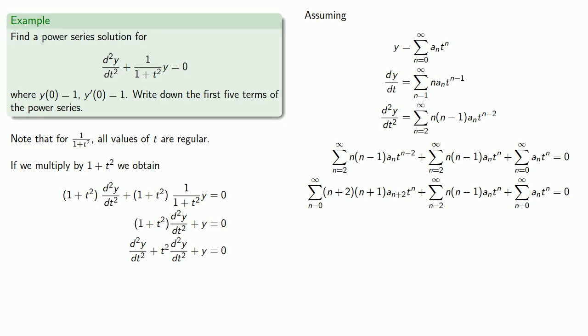So now all our powers of t are the same, but the series start in different places. So we'll have to adjust, and remember, you can always start later. So these two series start at n equals 0, we want to start them at n equals 2, so we'll adjust them.